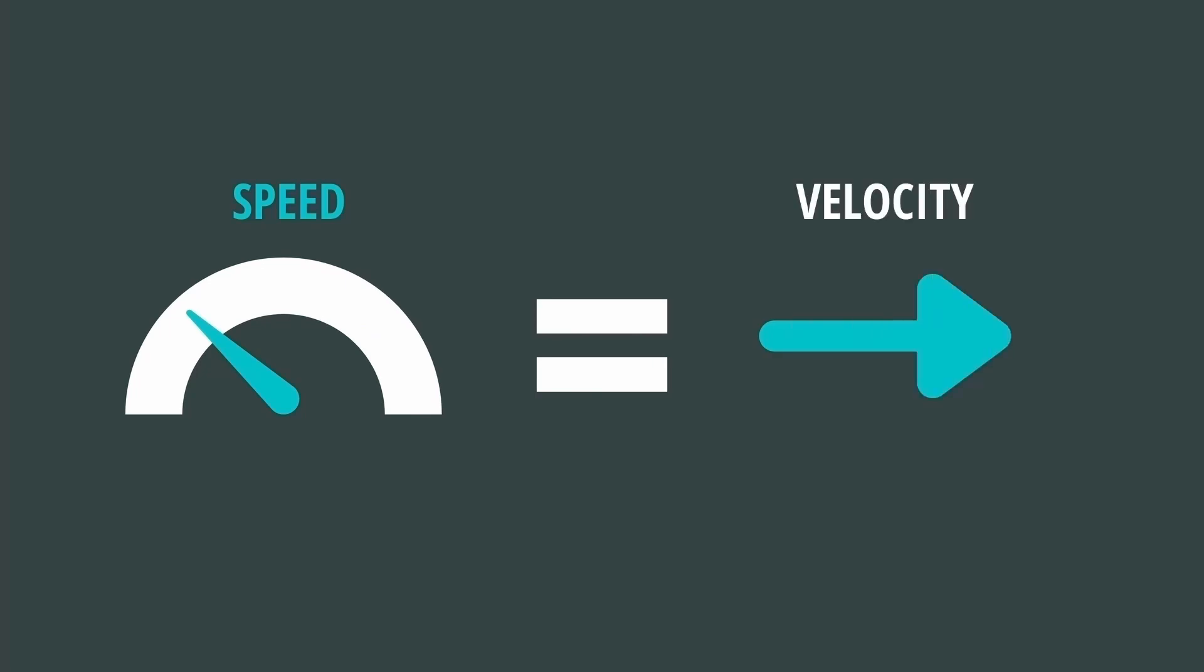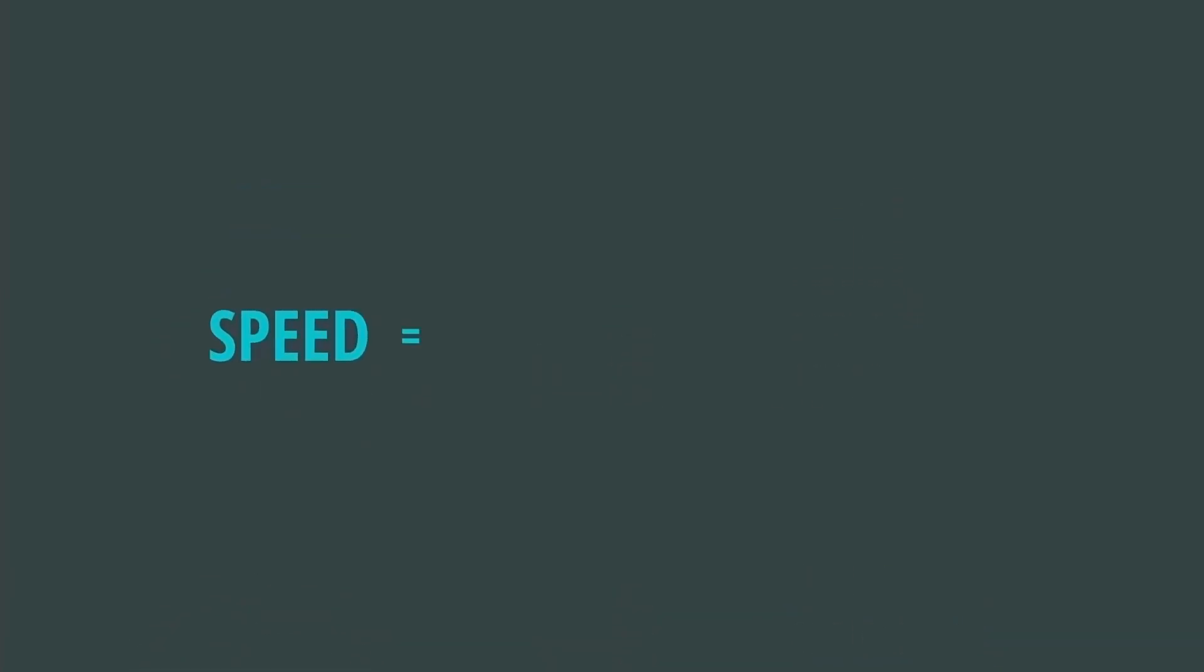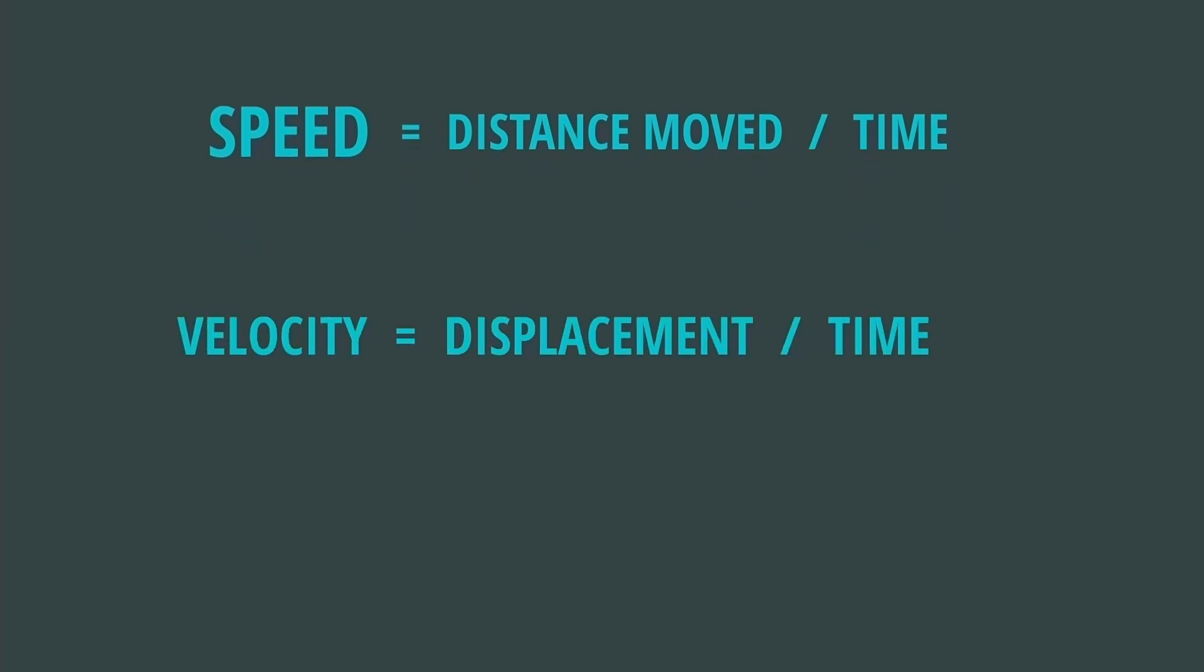It is a common mistaken belief that speed and velocity are the same value. But these two physical quantities are actually different. Speed is defined by distance moved in space divided by time. Velocity is displacement divided by time.